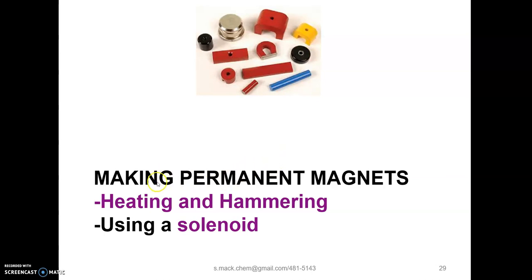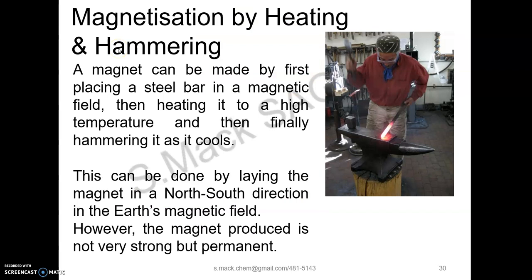Let's take down from this slide two methods to make a permanent magnet. One is called heating and hammering, and the second is called using a solenoid. You can pause the video and read the slide, or you can listen and then pause the video and read the slide.